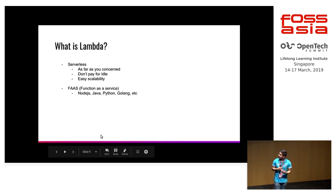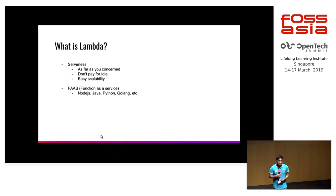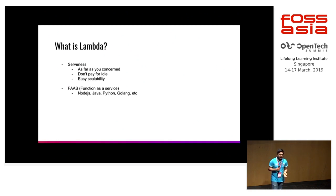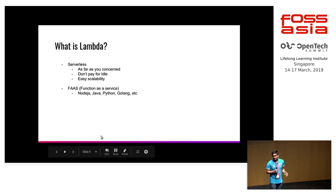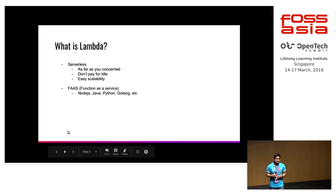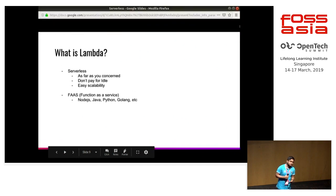Easy scalability — you don't have to worry about scalability. If your app gets hit and you receive one million requests, Lambda will scale automatically. Amazon scales your application automatically; you don't have to change anything in your code. Serverless is also known as Function as a Service, because here we are writing functions. These functions are not the same as functions in a programming language like Python or Java — it's not the same concept.